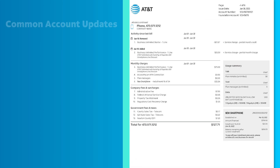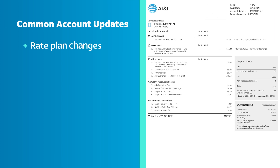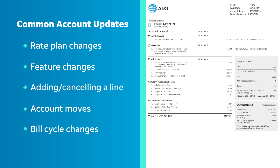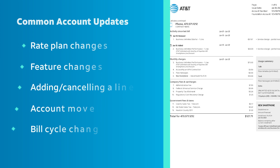Common account updates include rate plan or feature changes, adding or canceling a line, account moves, or bill cycle changes. Let's look at how to estimate partial month charges and credits if you've made a change to your account between bill periods.